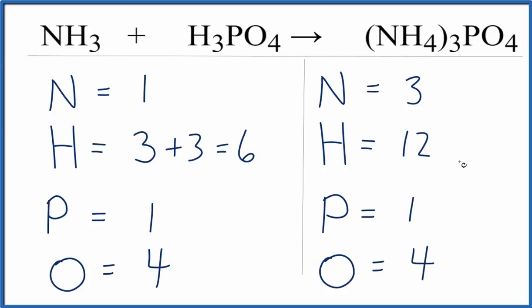I think I'd like to start and fix the nitrogens and see if that maybe helps us with the hydrogens. So I have three nitrogens on the products, one on the reactants, so I need to multiply this by three.